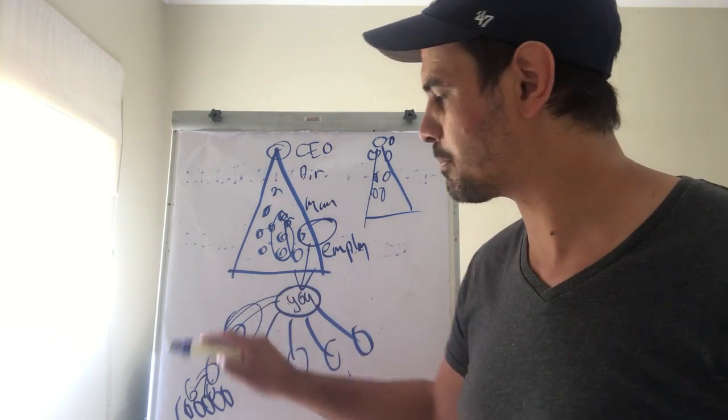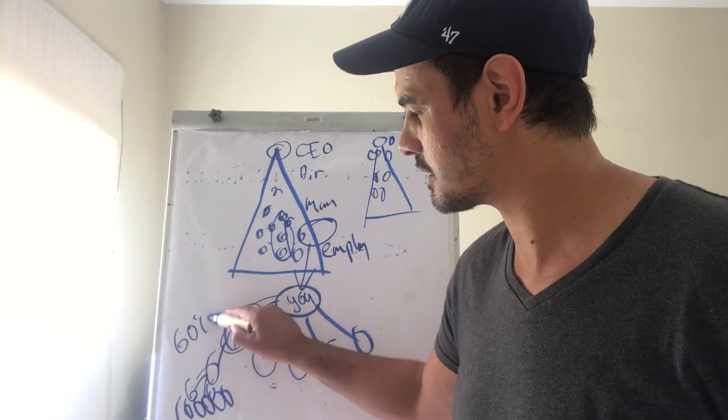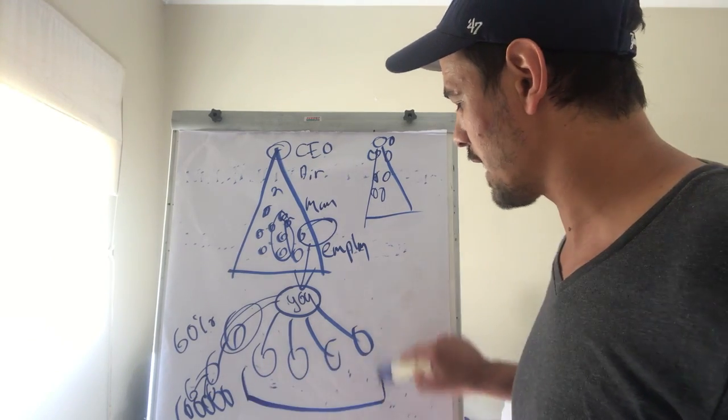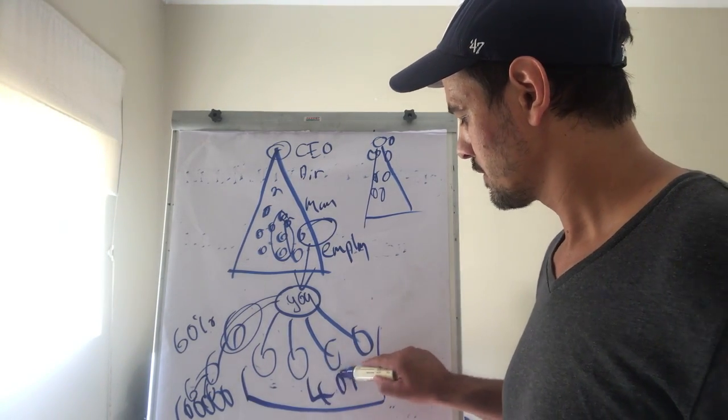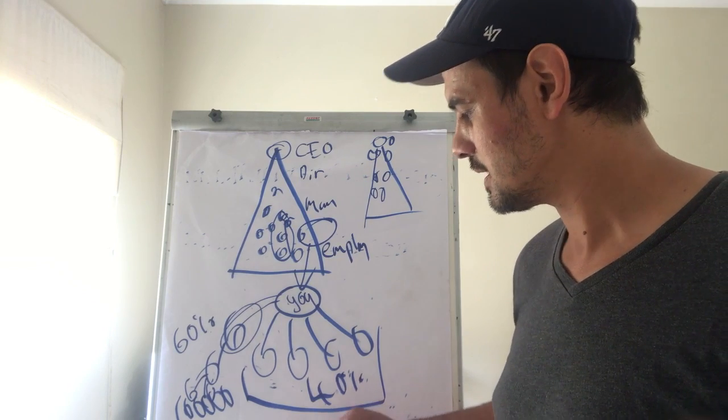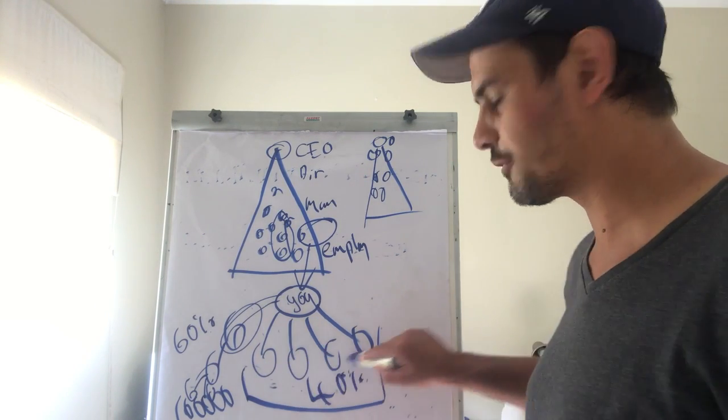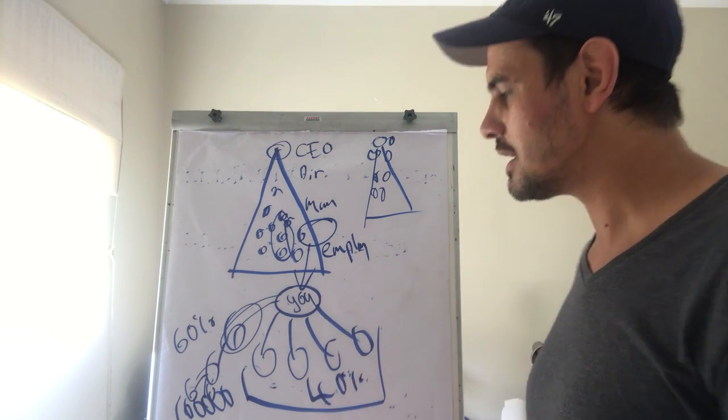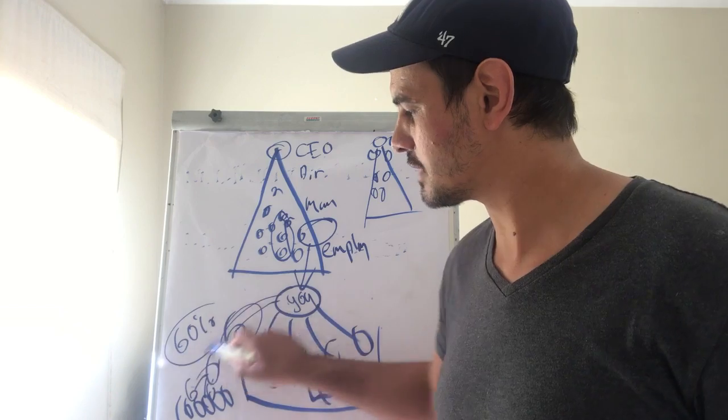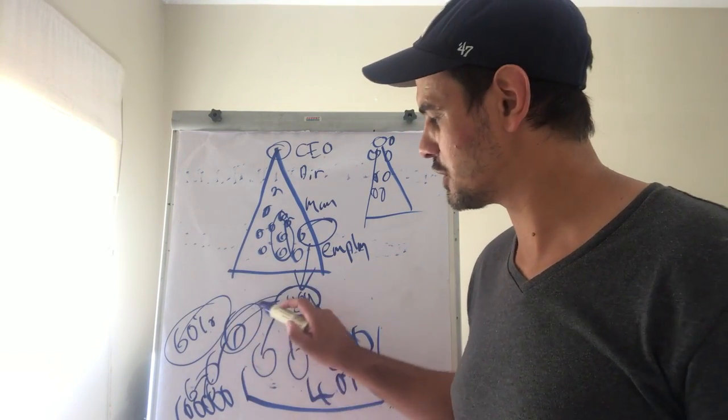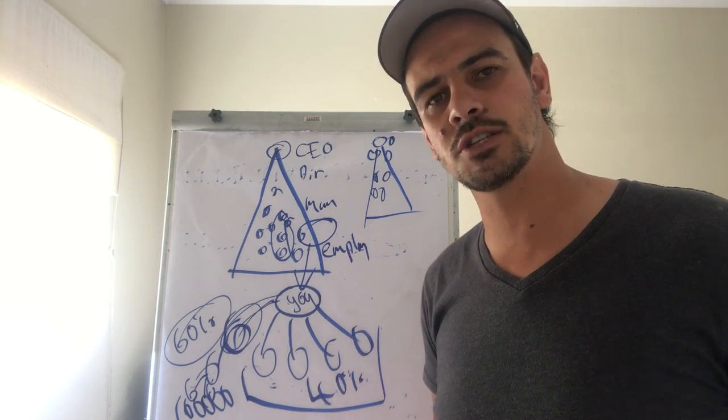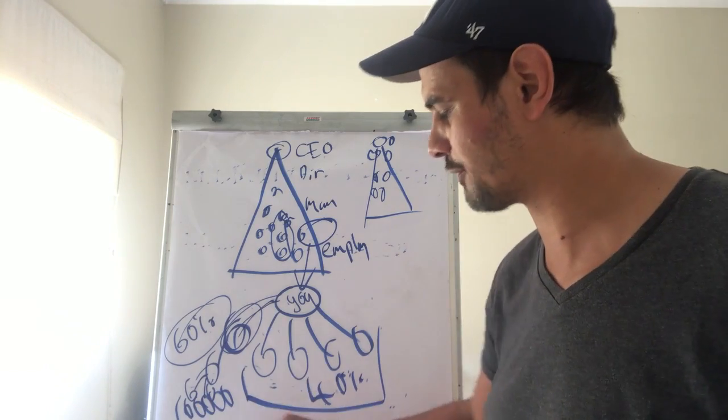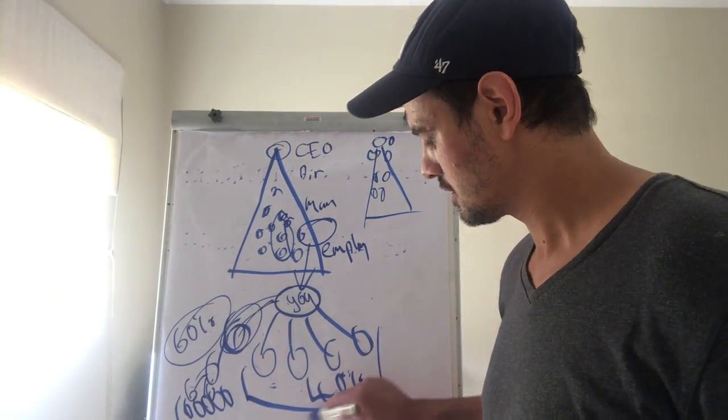...because you've got all this volume but you've only got it down one leg and Manatech only pays - sixty percent of your total volume may come out of one organization and the other forty percent of your business must be spread over these four other legs. So as you can see you only get paid a total of sixty percent in your first organization.